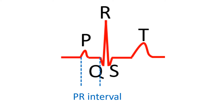Next is the PR interval, measured from the onset of the P wave to the onset of the QRS complex. The QRS complex is due to electrical activity of the ventricles. The PR interval represents the time taken for electrical signals to conduct from the uppermost part of the atria to the beginning of the ventricles. Normal range of PR interval in an adult is 0.12 to 0.2 seconds. PR interval decreases as heart rate increases.